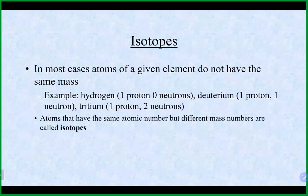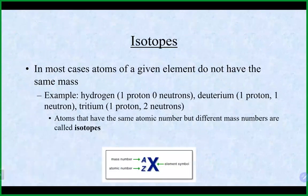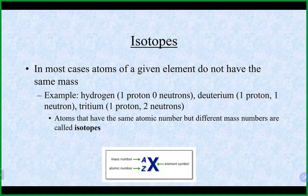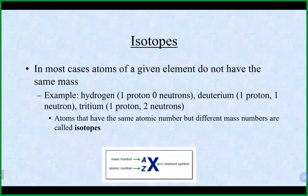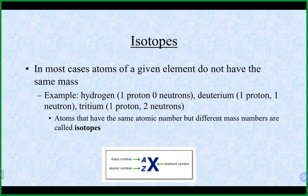Isotopes are the same element but with different masses. This is what violated Dalton's atomic theory, where he said all atoms of the same element are identical. For example, hydrogen has one proton and no neutrons. Deuterium, sometimes called heavy hydrogen, has one proton and one neutron. Tritium, the radioactive version of hydrogen, has one proton and two neutrons. Atoms with the same atomic number but different mass numbers — meaning different numbers of neutrons — are called isotopes.